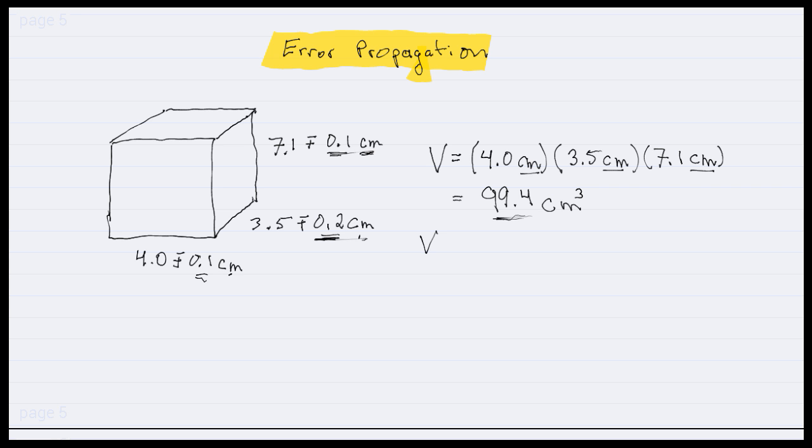So the first thing we're going to do is calculate the maximum possible volume. And this is when we take our measurements, we take the maximum possible measurement in the range. So in the case of the width of 4.0 plus or minus 0.1, the maximum width is 4.1 centimeters. The maximum depth is 3.7 centimeters. And the maximum height is 7.2 centimeters. When you do this calculation, you get a maximum volume of 109.2 centimeters cubed.